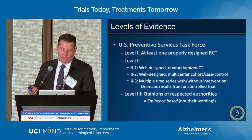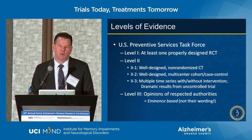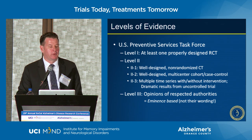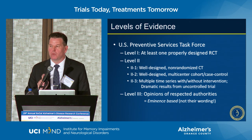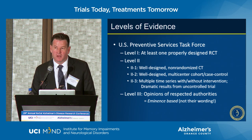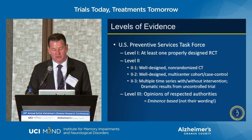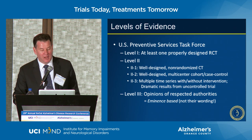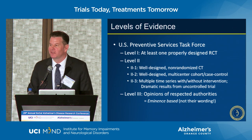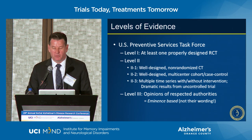The U.S. Preventive Services Task Force levels of evidence: Level 1, our highest level, is at least one properly designed randomized clinical trial — this is what we're talking about from a regulatory perspective. Level 2 is a well-designed non-randomized clinical trial, essentially an observational study. Level 3 is opinions of respected authorities — we often call this 'eminence-based medicine' rather than evidence-based medicine. That doesn't hold much sway. You really need to bring the data and understand empirically what's happening.